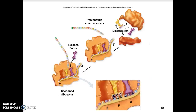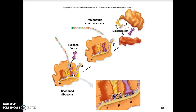Here's a magnified view of the process. The RNA goes through the ribosome — the large section and small section. The tRNAs bring over the amino acids. Then there's the termination, what we call the release factor. It locks in and signals that the last amino acid has been added. The chain pops off, and the ribosome breaks apart and disassociates.